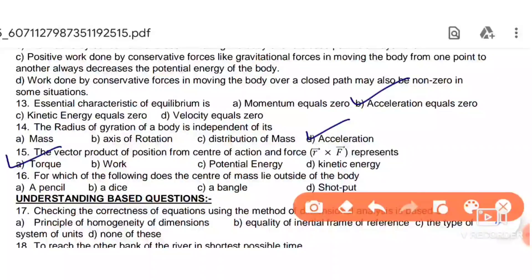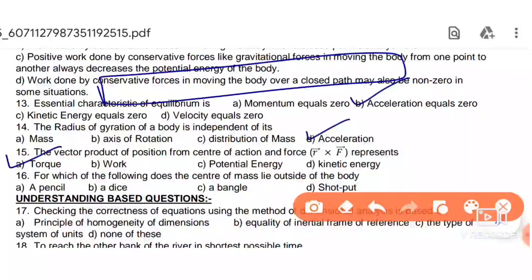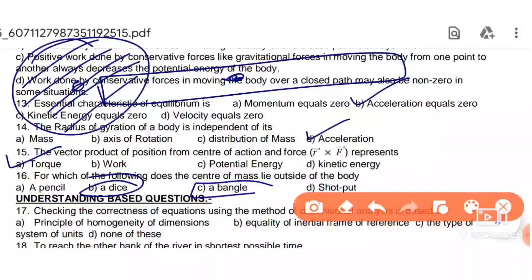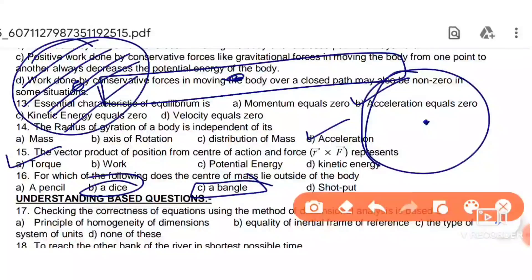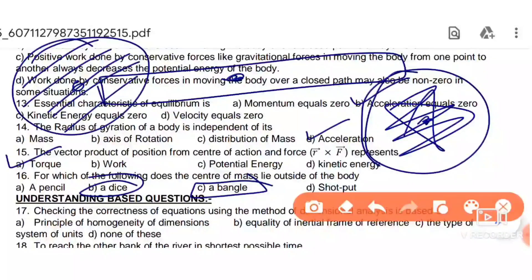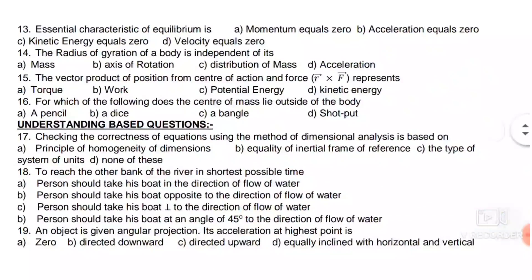Next: for which of the following does the center of mass lie outside the body? For a disk, the center of mass lies within. But for a bangle (ring), the center of mass lies outside the body. So the bangle is the correct answer.